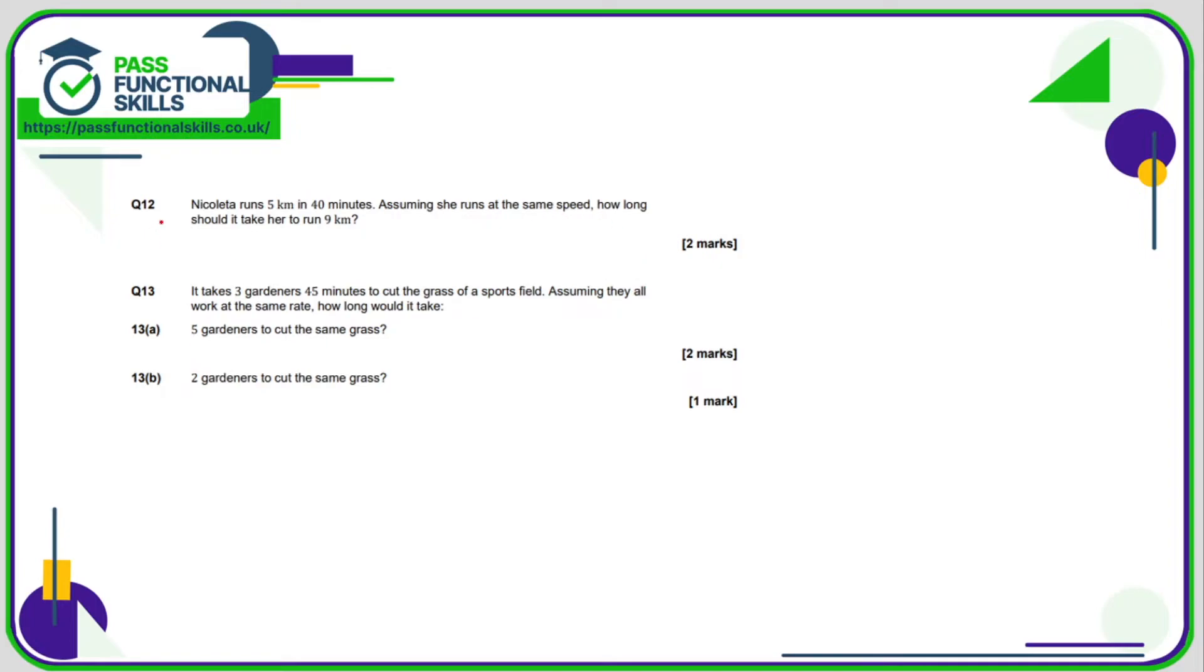Question 12, we're not allowed to use a calculator. Five kilometers takes 40 minutes, so the easiest thing to do is work out how long one kilometer will take, and that's 40 divided by five which is eight minutes. Therefore nine kilometers is going to take nine times eight minutes, which is 72 minutes.